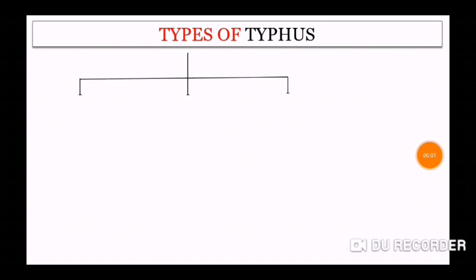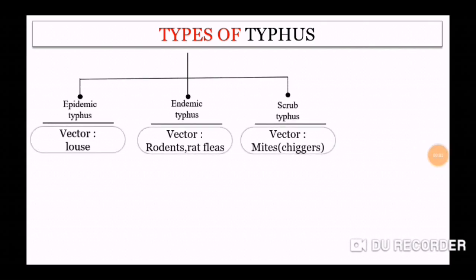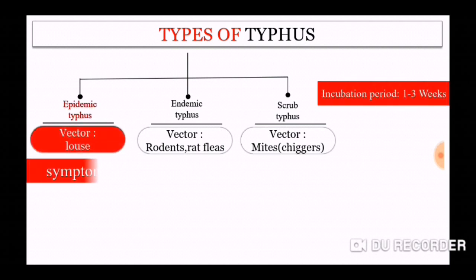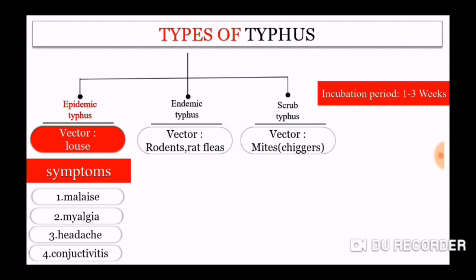Types of typhus. There are three major types of typhus: epidemic typhus, endemic typhus, and scrub typhus. This classification is mainly based upon the vector causing the typhus. Epidemic typhus is mainly spread through the vector lice, and its incubation period is around 1 to 3 weeks.